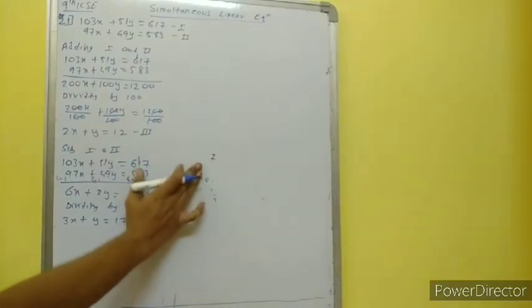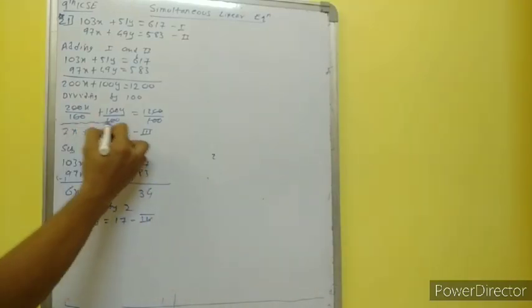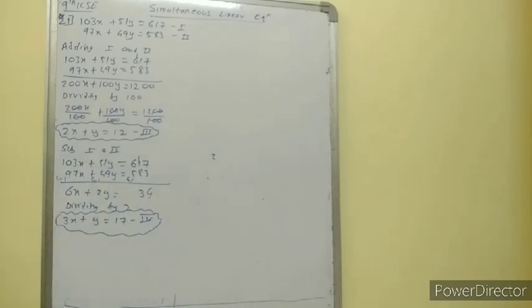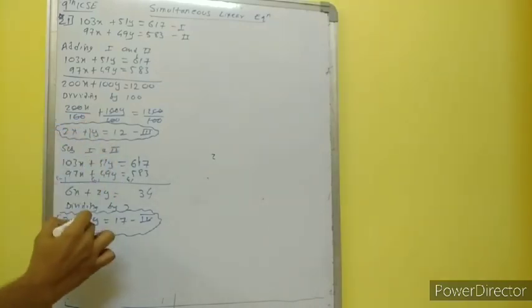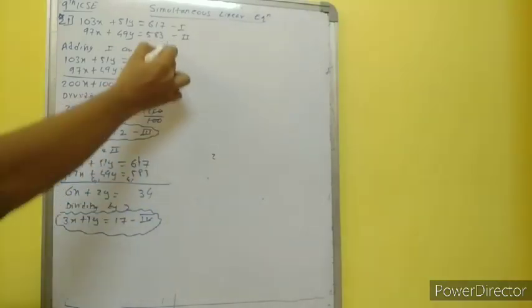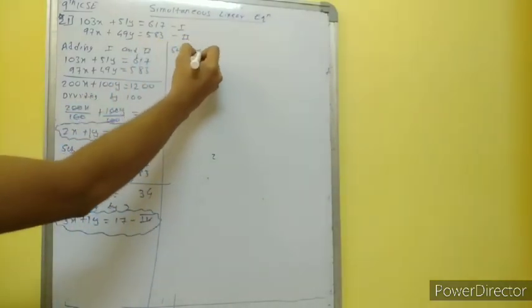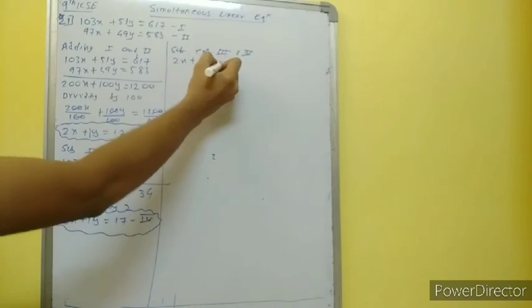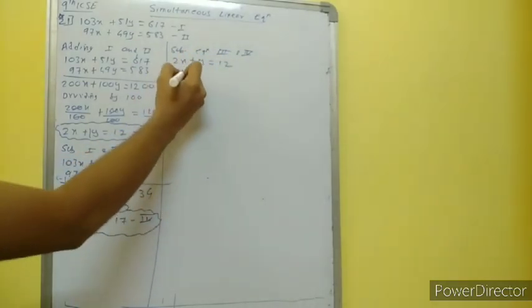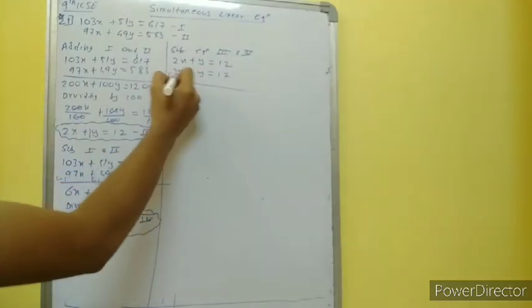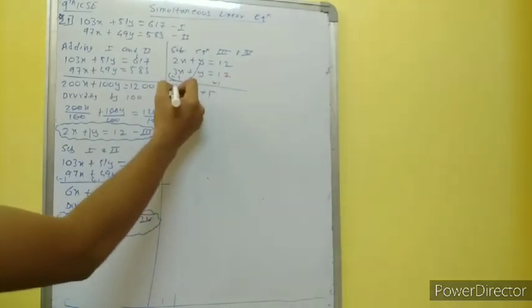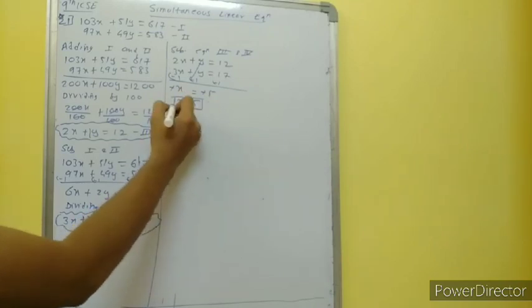So this is right. Now we have two easier equations: 2x plus y is equal to 12, and 3x plus y is equal to 17. We have 1y and 1y with the same sign, so subtracting equations 3 and 4: minus signs change, the y's cancel, minus x equals 12 minus 17 which is minus 5. Minus minus cancels, so x is equal to 5.